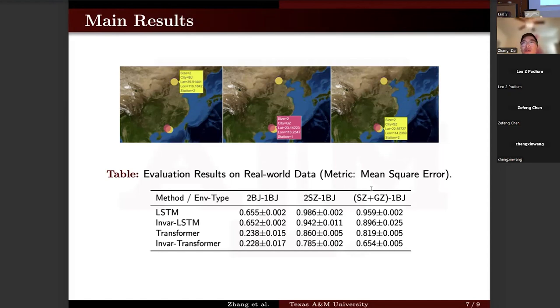When we use the training data from Shenzhen and the target environment in Beijing, this big geographic domain shift weakens the time series forecasting model. But the invariant time series model can still achieve great accuracy.